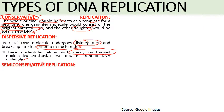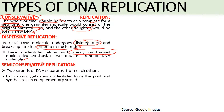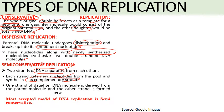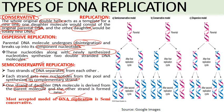The third type is semi-conservative replication. In this type, the two strands of the DNA double helix separate from each other, and each strand gets new nucleotides from the pool to synthesize a complementary strand. In each daughter DNA molecule, one strand is derived from the parent molecule and the other strand is brand new. This is the most accepted model of DNA replication.